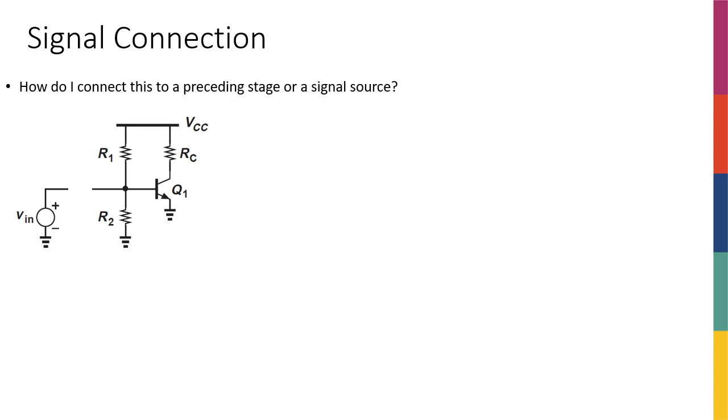Okay, the last thing I want to talk about is what I promised in the beginning - we're going to talk about all these biasing circuits, but at the end we have to use this biasing for an amplifier. Now we have to talk about how do I connect the signal source to this circuit.